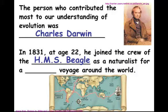He got the chance to go on this journey that was going to travel around the world — a big undertaking, five years sailing around the world. He got to visit a lot of new places, travel to exotic countries, see different organisms, and had an amazing journey. His job on the ship was to be the naturalist, which was right up Darwin's alley because he loved nature and collecting specimens. His job was to travel with the boat, go where they went, keep a log and diary, write journals of all the things he saw.